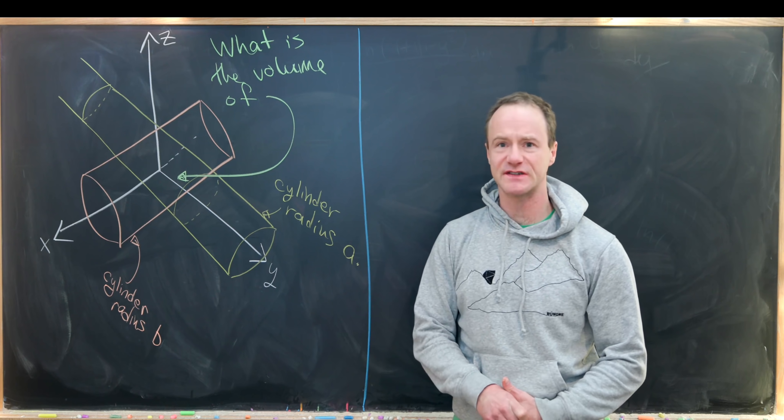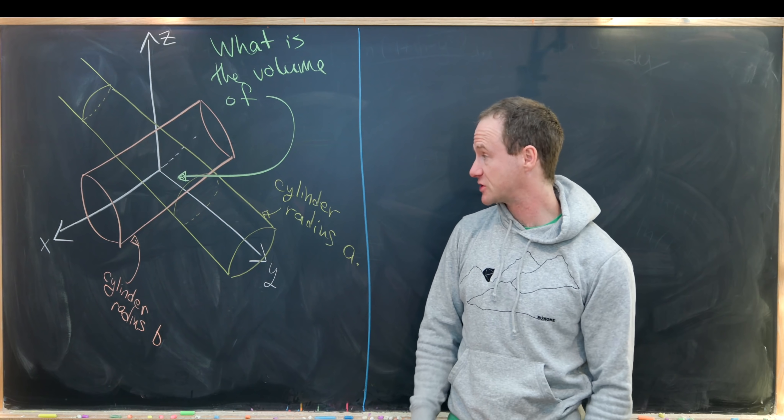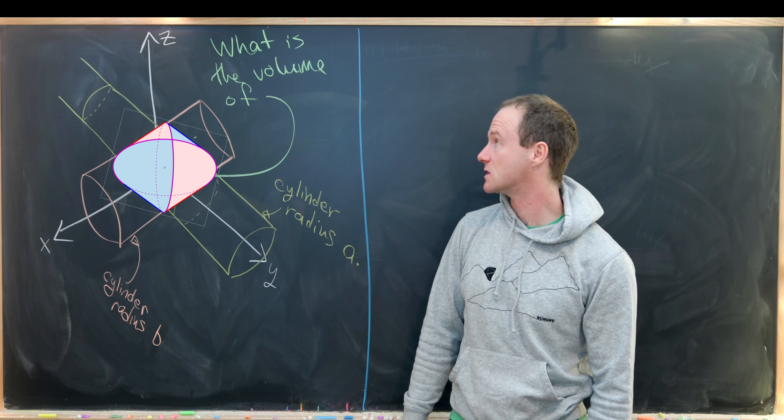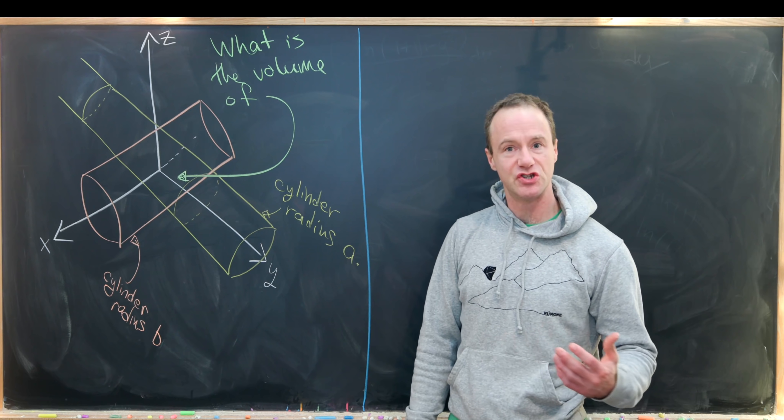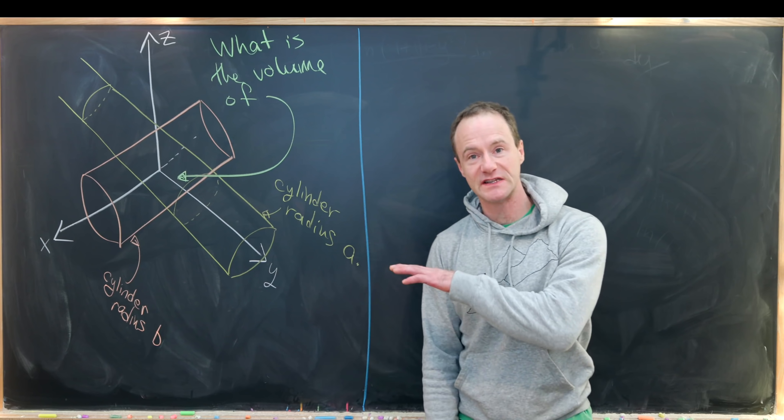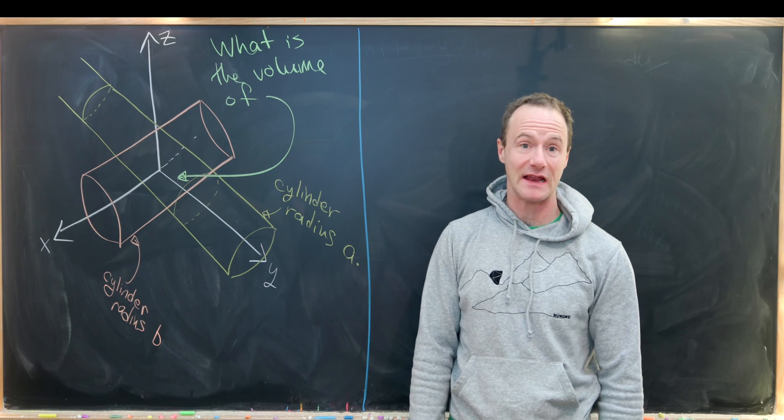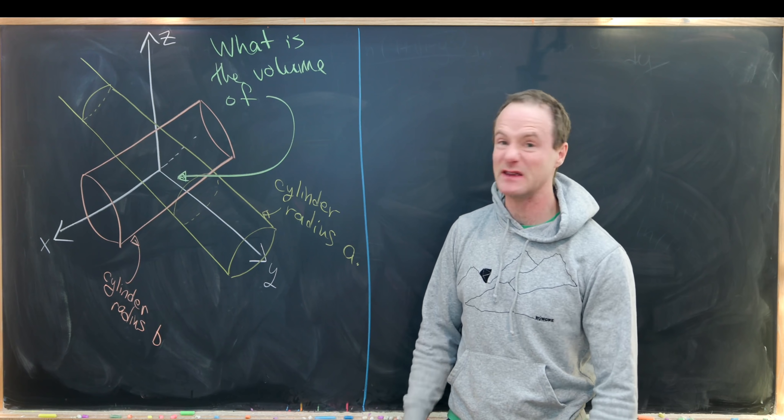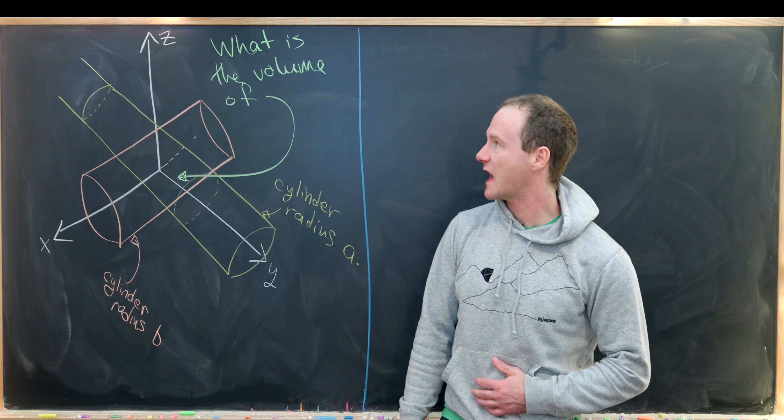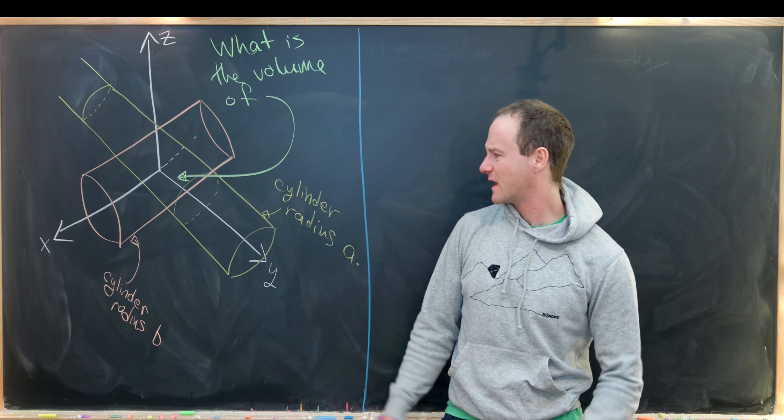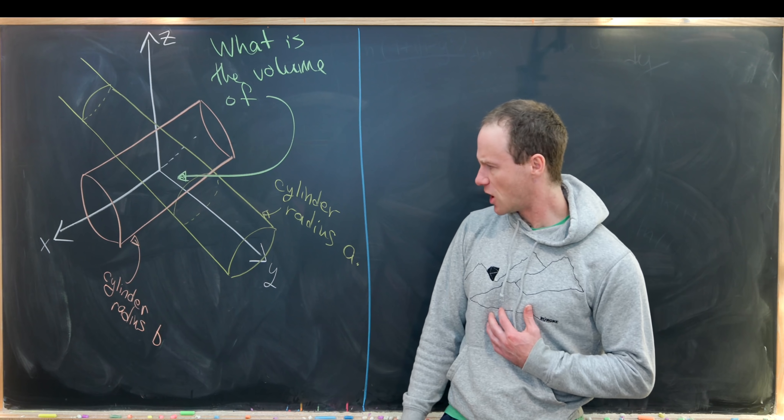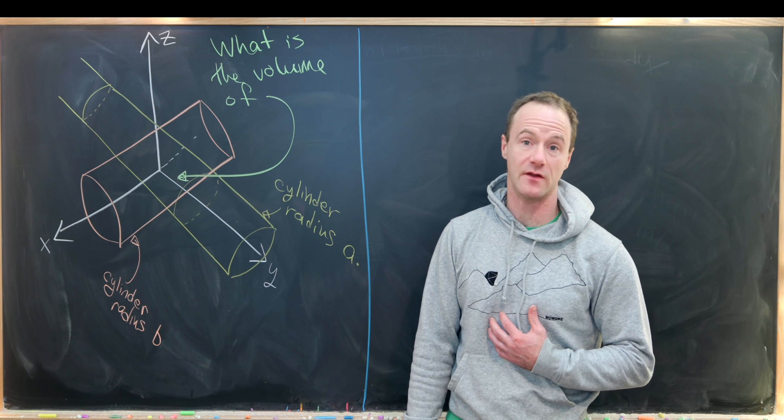My picture of this intersection isn't that great, so I'll put a picture that's a little bit better on the screen right now, just to give you an idea of what this looks like. Now let's jump into trying to find this volume. We'll do this by slicing this with a plane, which is like z equals z naught or z is fixed. But in order to do that, we'd probably like to write down equations for each of these cylinders.